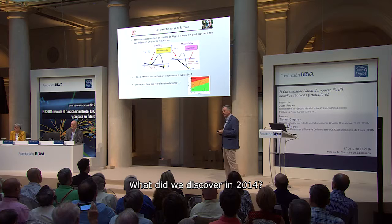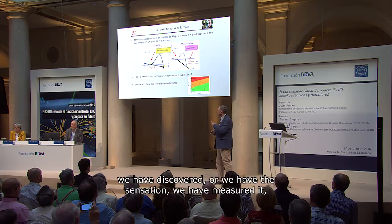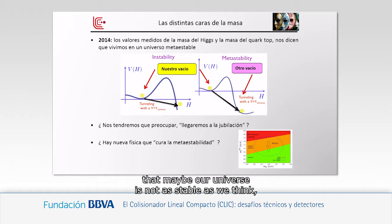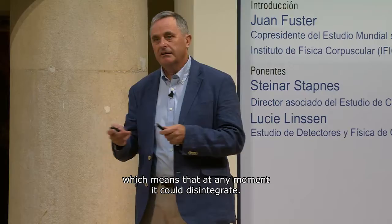With the measurements of the mass of the top quark and the mass of the Higgs, we have discovered — or at least have the feeling — that perhaps our universe is not as stable as we believe, and that it is in a state of metastability. That means that at some moment it could disintegrate.